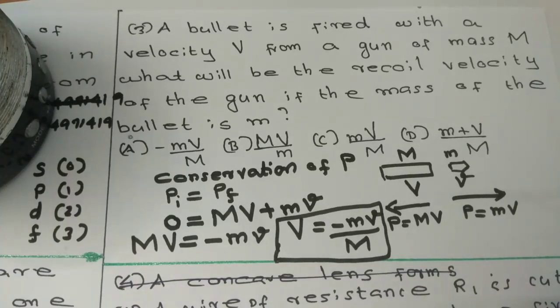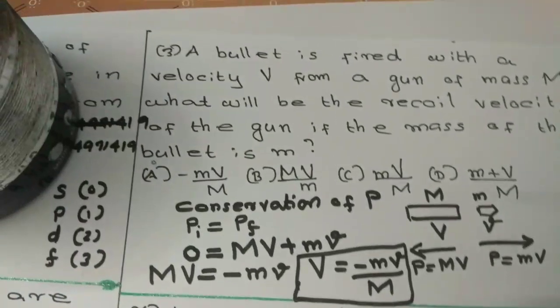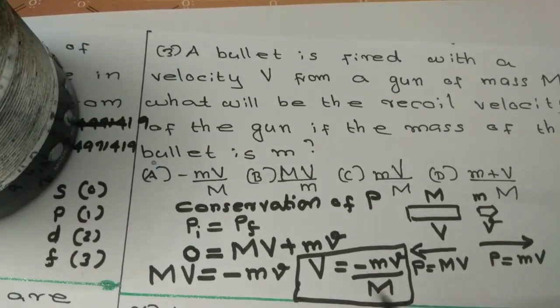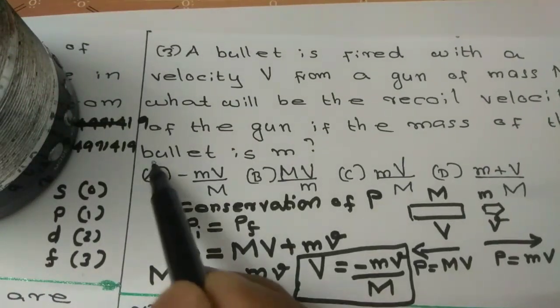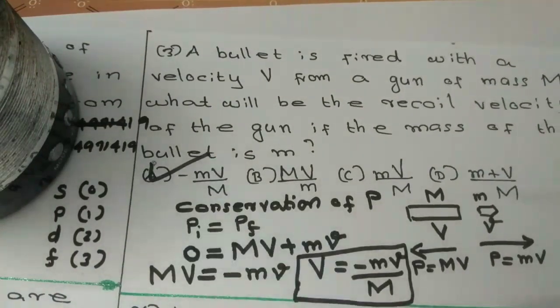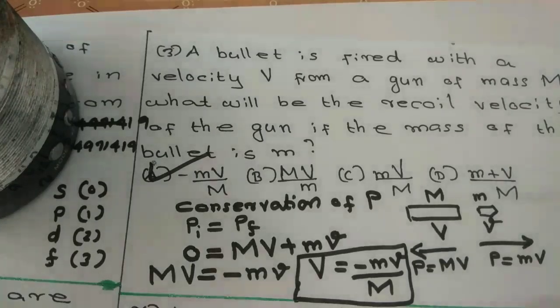The negative sign represents the gun moving in the opposite direction. So option A is correct: the recoil velocity is minus mv divided by capital M.